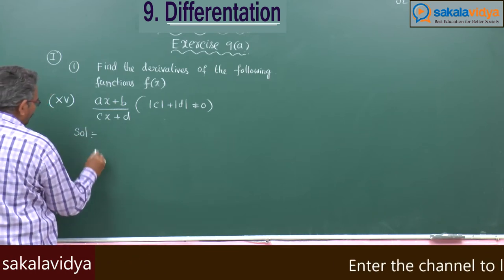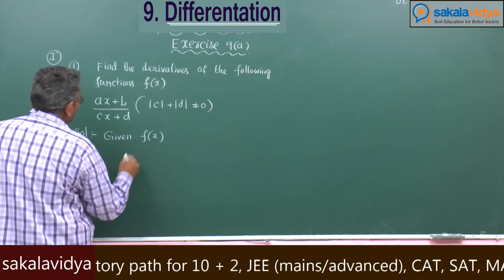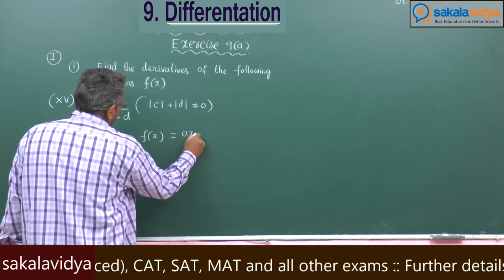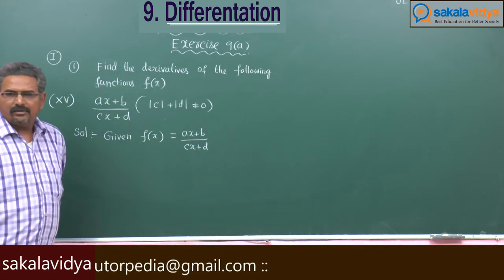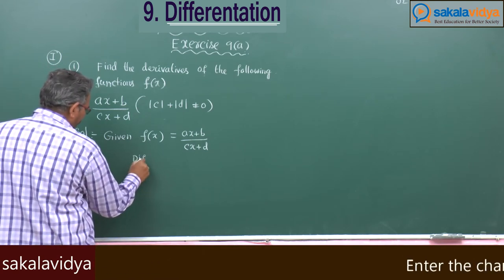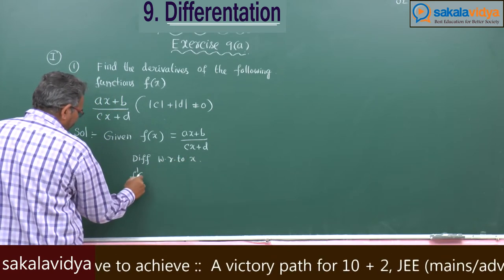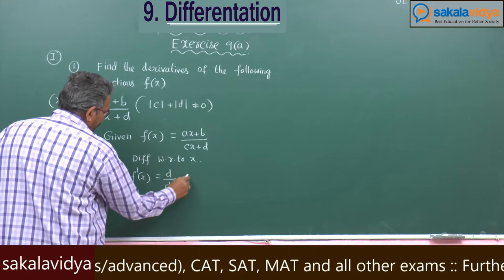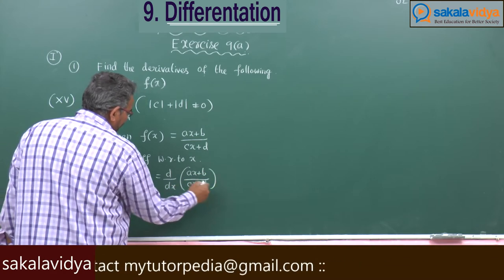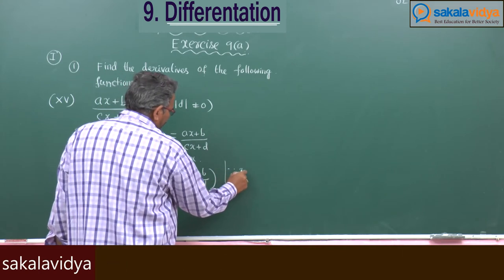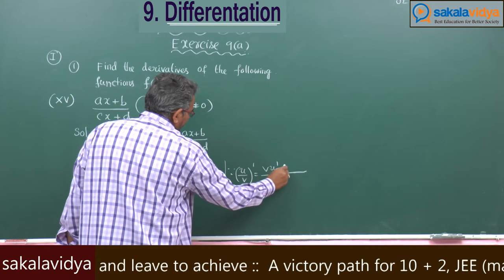Solution: given f(x) = (ax + b)/(cx + d), differentiate with respect to x. f'(x) = d/dx of (ax + b)/(cx + d). This is u/v form, so we apply the quotient rule: (v·u' - u·v') / v².